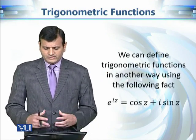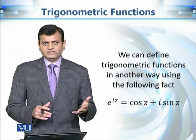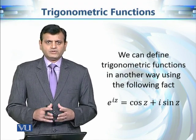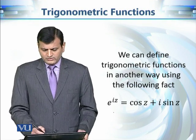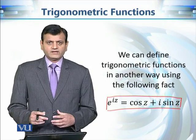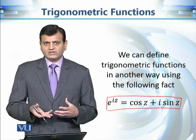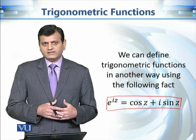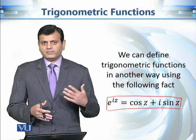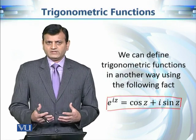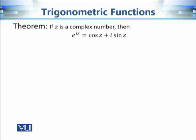We now want to define trigonometric functions in another way. That was the series definition; now we present a second definition using the following fact, which we will first prove: e^(iz) = cos(z) + i·sin(z). One important note — please do not confuse this with Euler's formula. Euler's formula uses e^(iθ) where θ is a real number, whereas here z is any complex number.